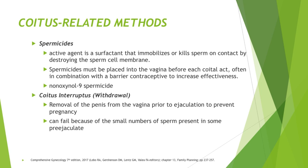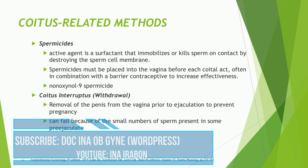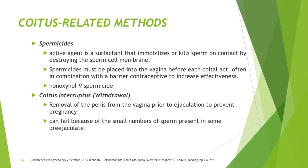Coitus-related methods include spermicides and the coitus interruptus or withdrawal method. For spermicides, the active agent is a surfactant — typically nonoxynol-9 — that immobilizes or kills sperm on contact by destroying the sperm cell membrane. Spermicides must be placed into the vagina before each coital act, often in combination with a barrier contraceptive to increase effectiveness. The withdrawal method is the removal of the penis from the vagina prior to ejaculation to prevent pregnancy, but it has a high failure rate due to small numbers of sperm present in the pre-ejaculate.